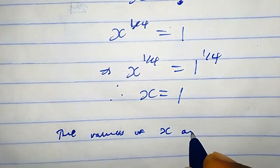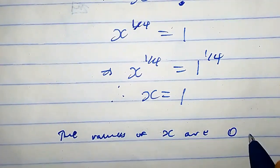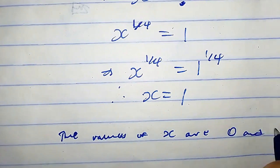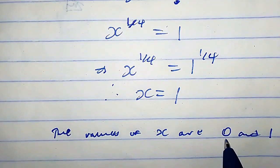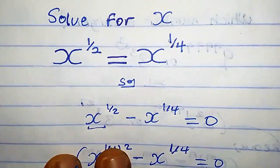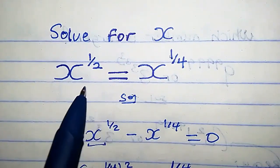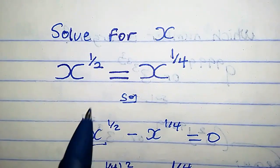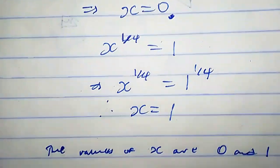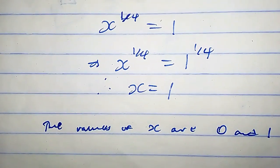The values of x are zero and one. When x equals zero we satisfy this equation, and when x equals one we satisfy this equation. That's the answer — thanks for watching, peace.